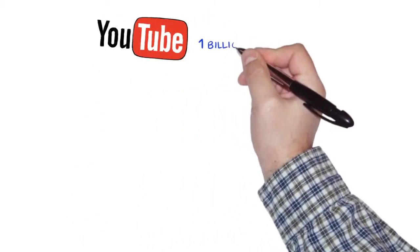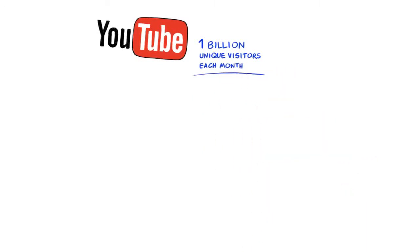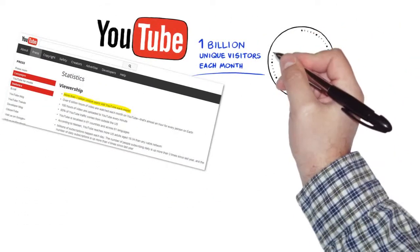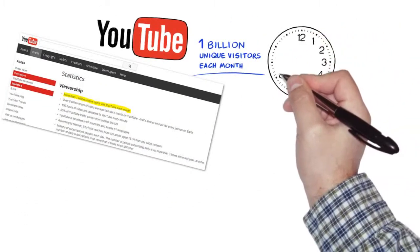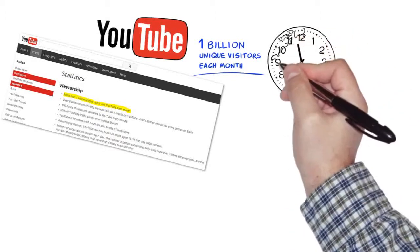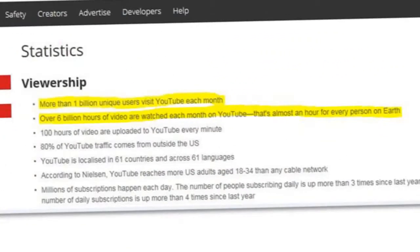Did you know that YouTube gets over 1 billion unique visitors each month to its website? Now you do. And did you know that over 6 billion hours of videos are being watched each month on YouTube? That's almost one hour for every person on Earth. Now you do.